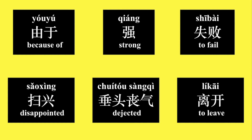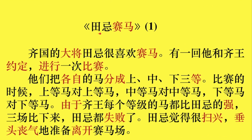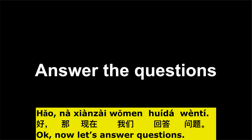田纪觉得很扫兴，垂头丧气的准备离开赛马场。好，那现在我来读一遍故事，没有拼音。田记赛马：齐国的大将田记很喜欢赛马，有一回，他和骑王约定进行一次比赛。他们把各自的马分成上中下三等，比赛的时候，上等马对上等马，中等马对中等马，下等马对下等马。由于骑王每个等级的马都比田记的强，三场比下来，田记都失败了，田记觉得很扫兴，垂头丧气的准备离开赛马场。